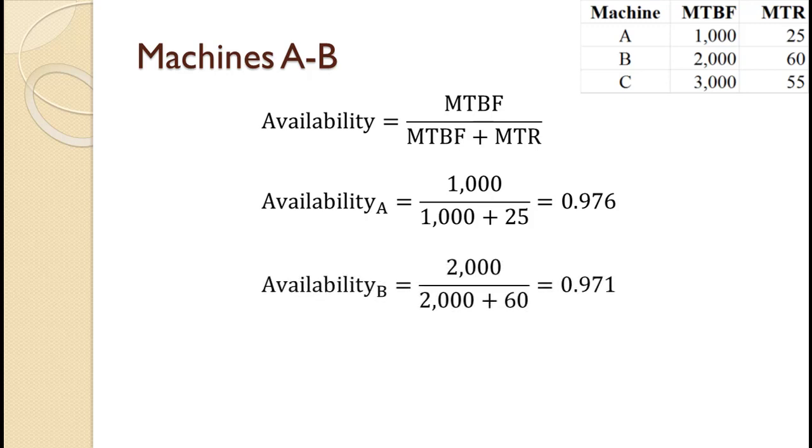For Machine B, 2,000 divided by the quantity 2,000 plus 60 equals 0.971. So even though it goes twice as long between failures, its longer repair time means it is available less.